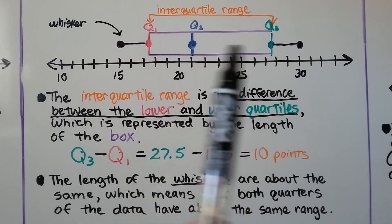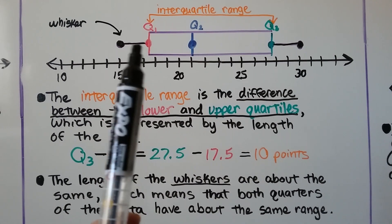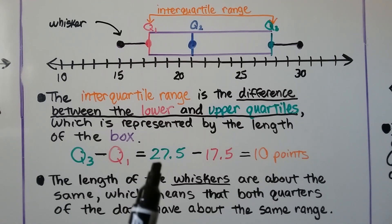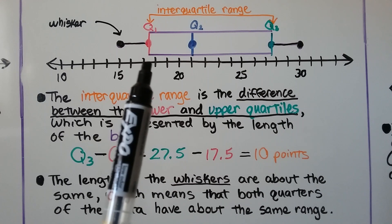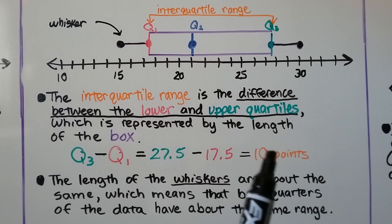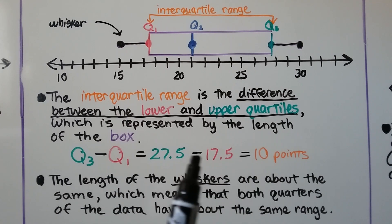So the interquartile range is the length of the box. We're not counting the whiskers. And this is at 27.5, this is at 17.5, so that's 10 points. The interquartile range for this high school basketball player's scores during the games he played this season are 10 points.